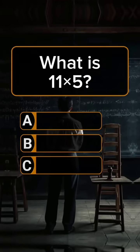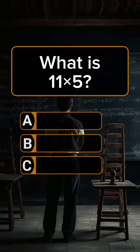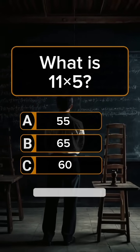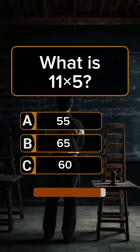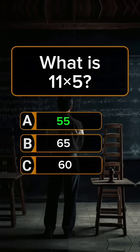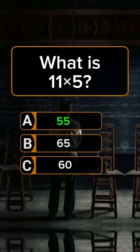Question 3. What is 11 times 5? Answer A: 55.